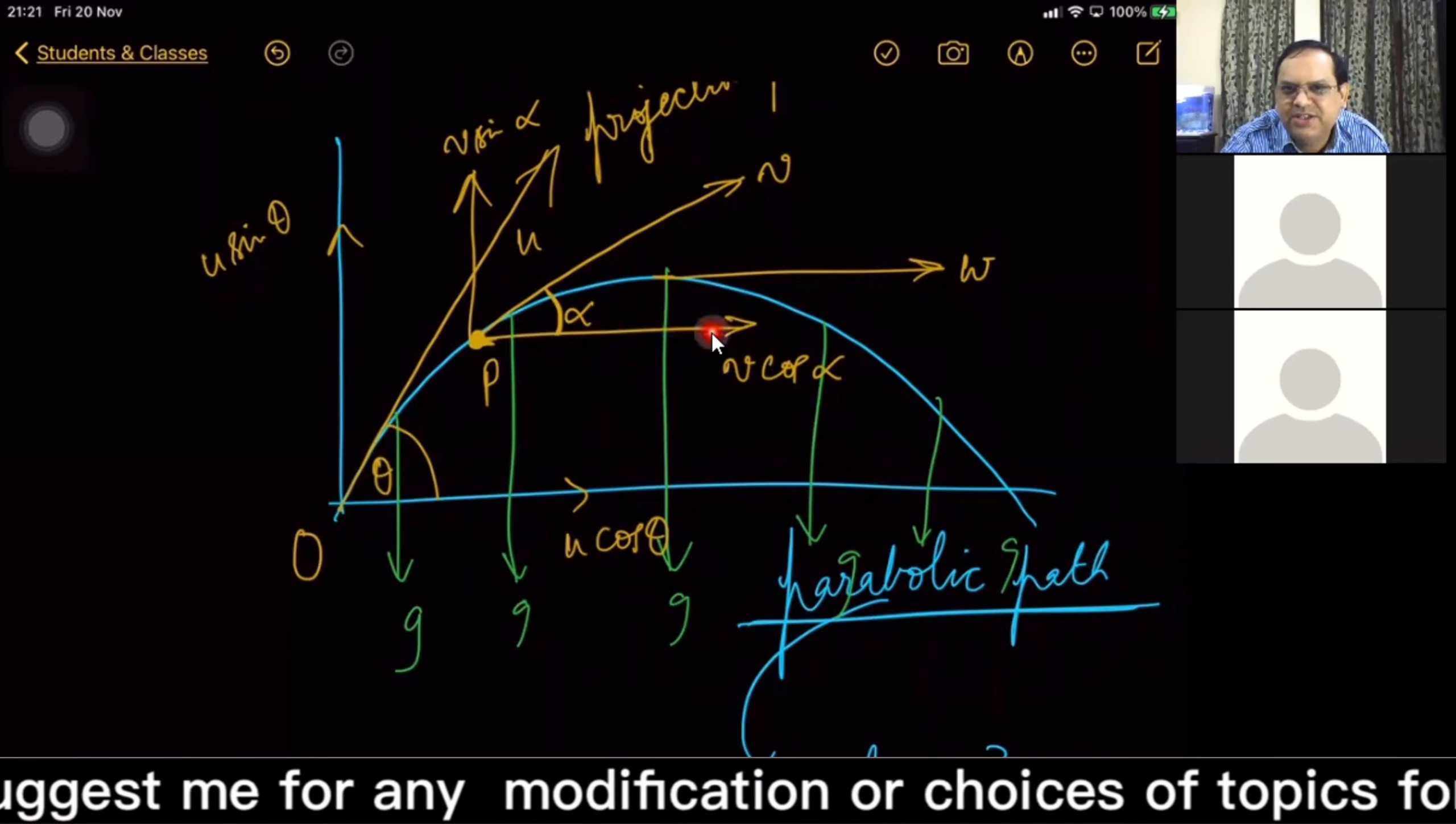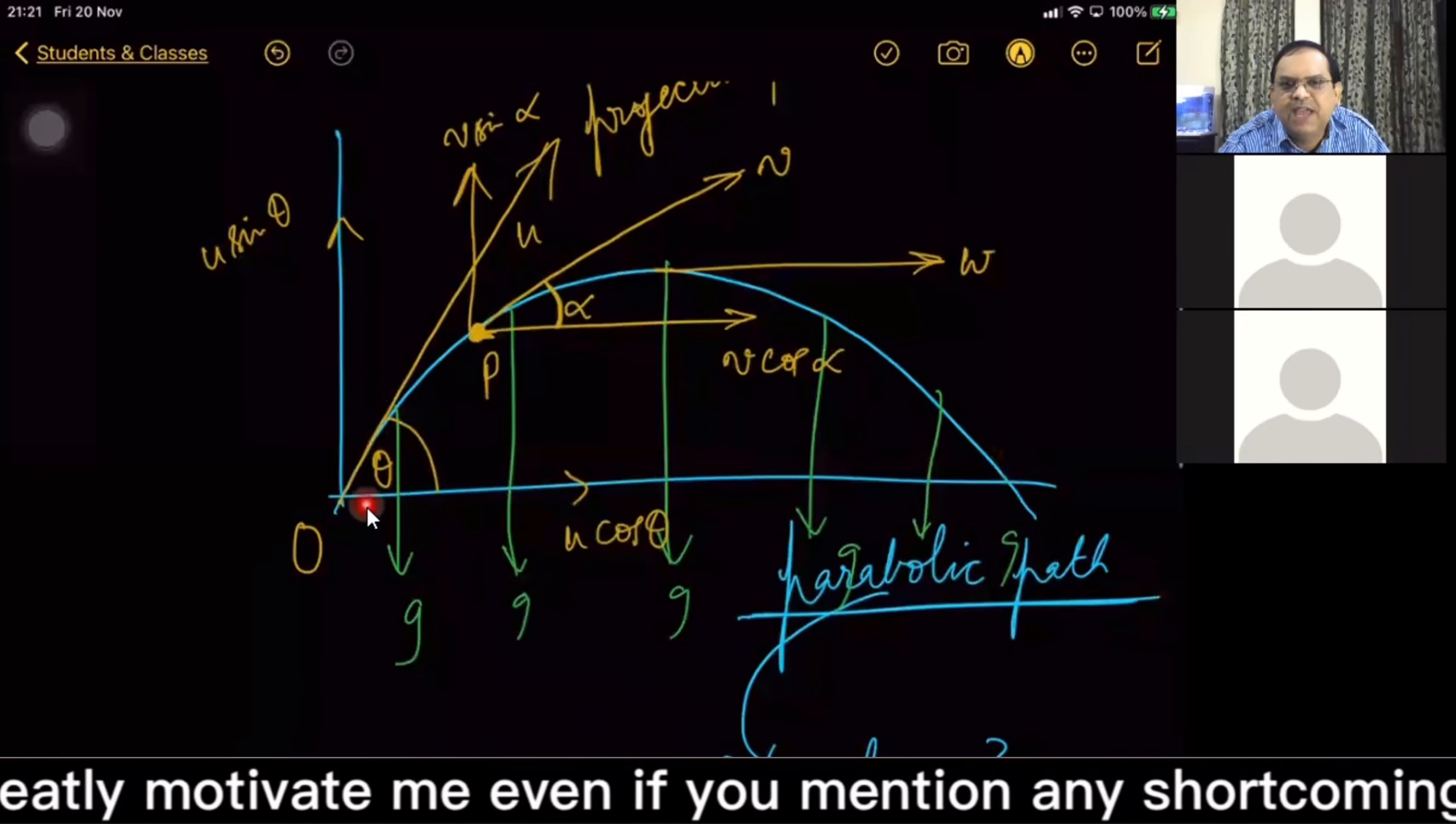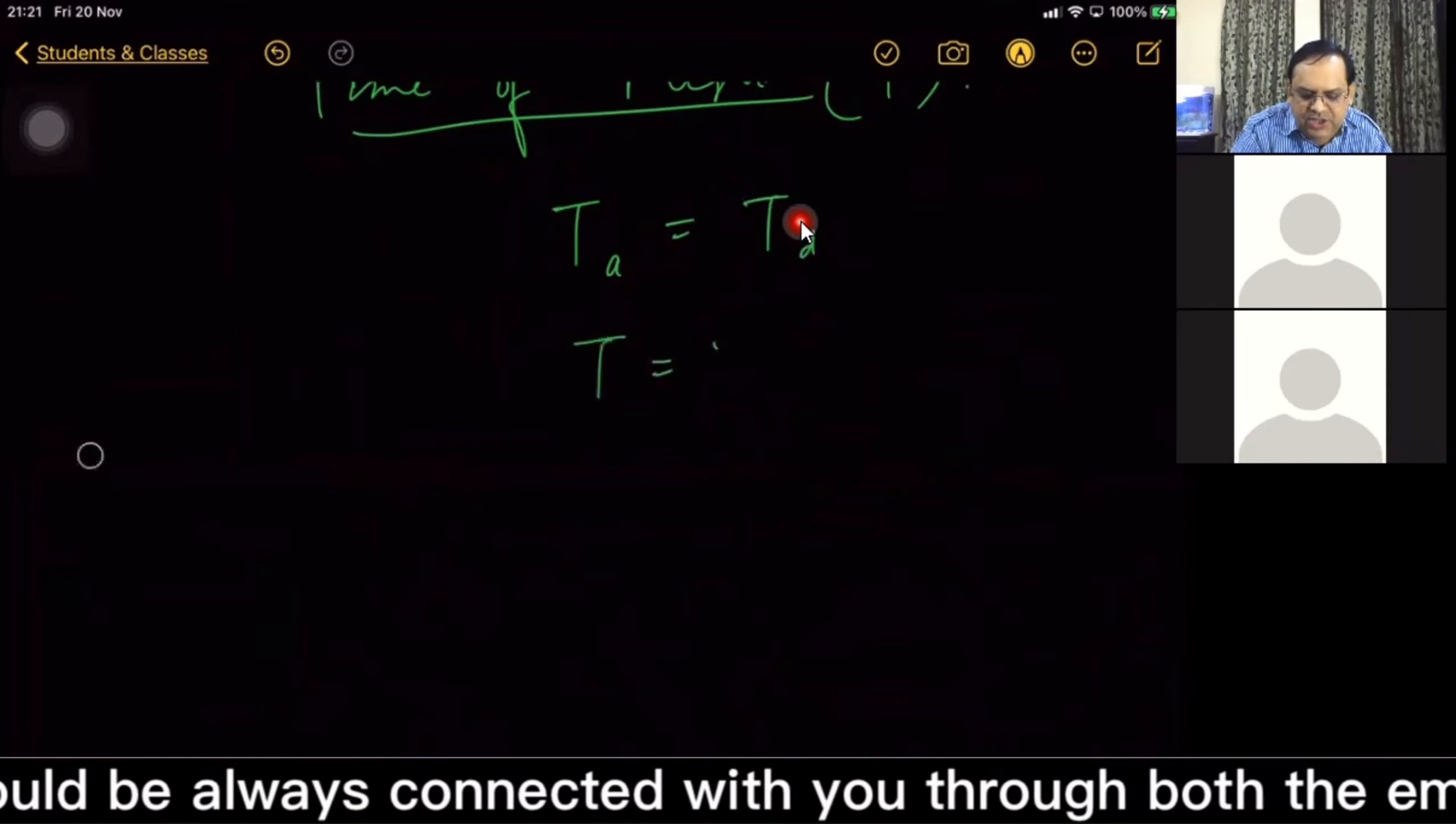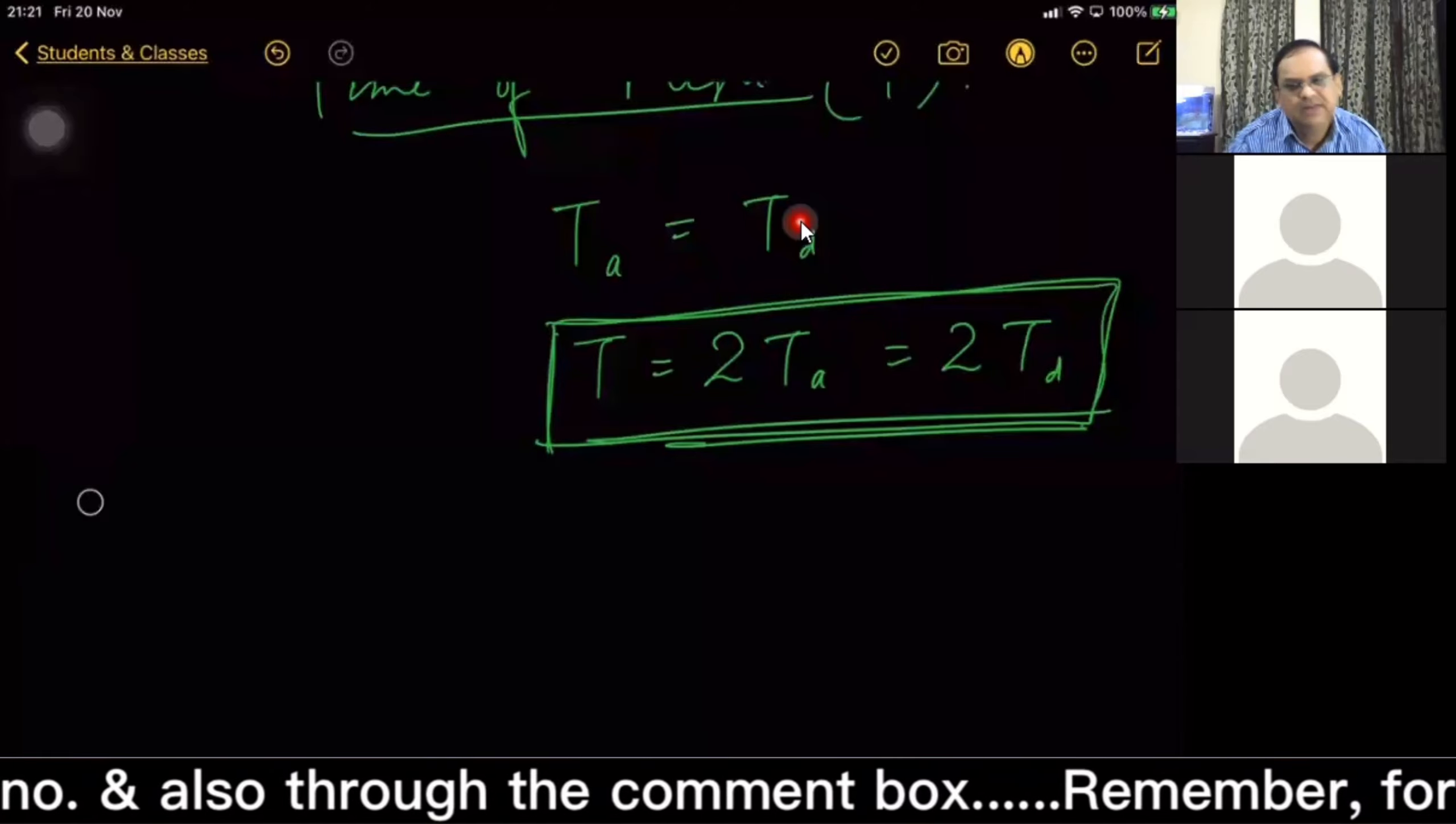Time of ascent is equal to time of descent. And total time of flight, how do you derive? Total time of flight is 2Ta = 2Td. Here we have a lot longer path, yes sir. Good, good, look, kinematics equation apply kar.